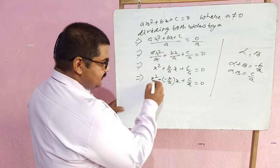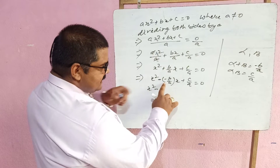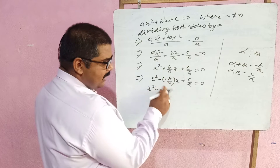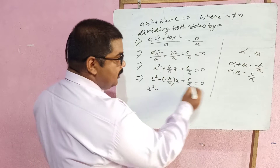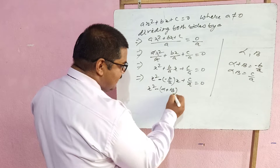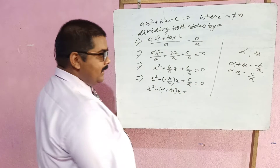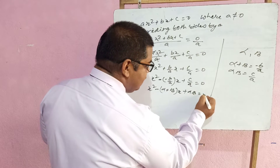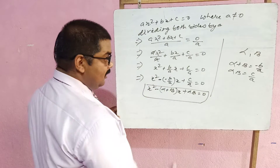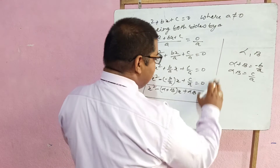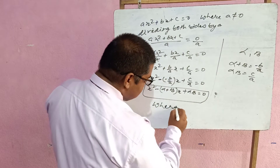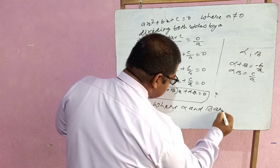I have adjusted the plus sign to minus minus because −B/A equals alpha + beta. So the equation becomes x² − (alpha + beta)x + (alpha × beta) = 0. This is the quadratic equation derived when two zeros are given, where alpha and beta are the two zeros. For a quadratic polynomial, you write x² − (alpha + beta)x + (alpha × beta) without the equals zero.